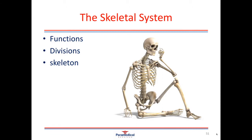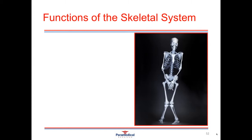So we're firstly going to be having a look at the skeletal system and we're going to cover off on the functions of the skeletal system, the different divisions and naming the bones of the skeleton. Some of the functions of the skeletal system include aiding in movement. Our muscles, our ligaments and our tendons help us to move the way that we do.